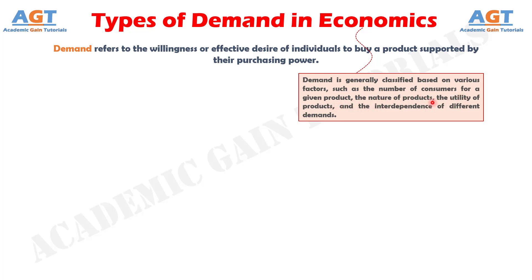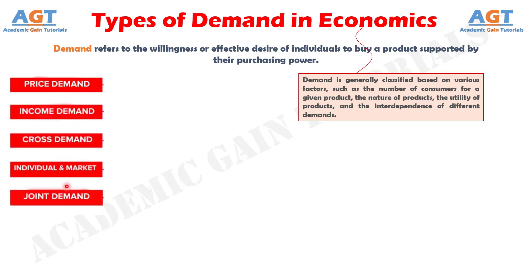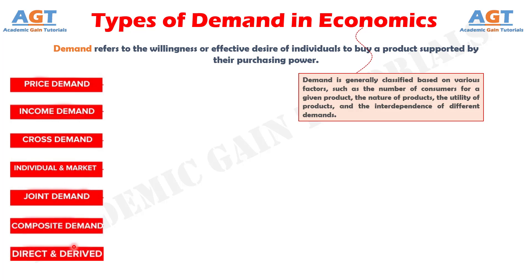There are seven types of demand in economics: price demand, income demand, cross demand, individual demand and market demand, joint demand, composite demand, and direct and derived demand.